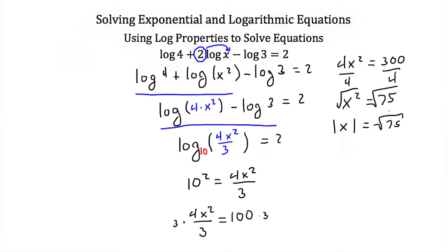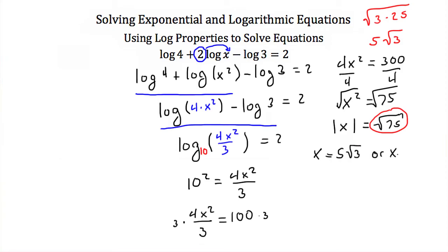The square root of 75 can be simplified — 75 is 25 times 3, and 25 is a perfect square of 5, so this is 5 square roots of 3. So x equals 5 square roots of 3 or negative 5 square roots of 3. But we have to check our solutions. Plugging in negative 5 square roots of 3 would require taking the log of a negative number, which is undefined, so that solution is extraneous. The only real solution is x equals 5 square roots of 3.